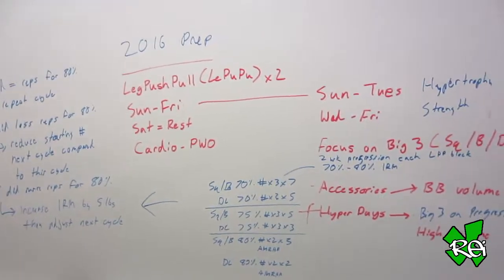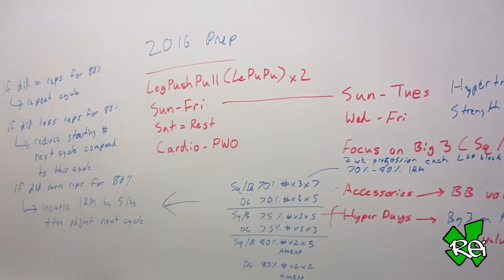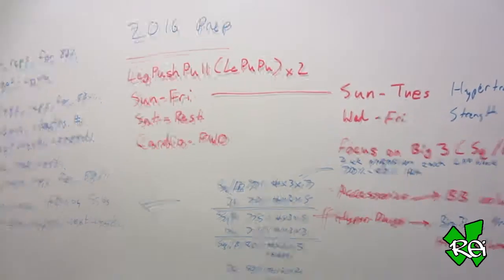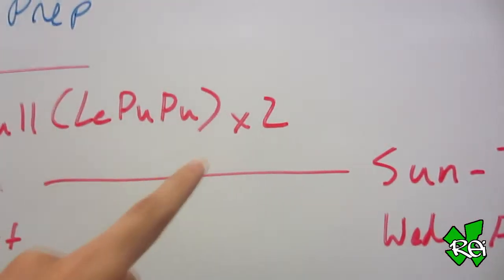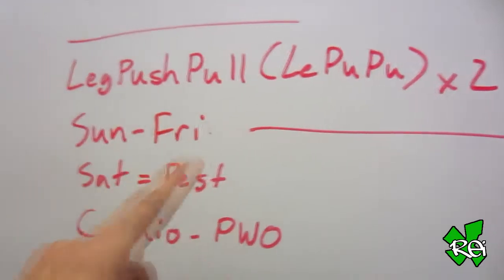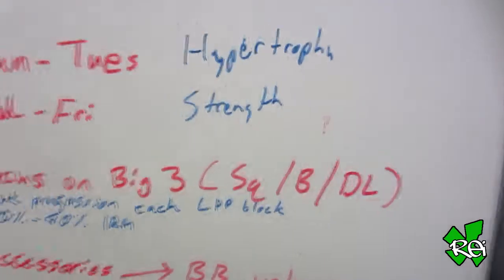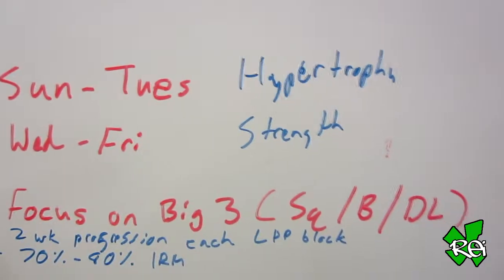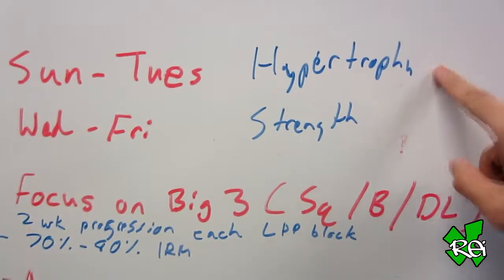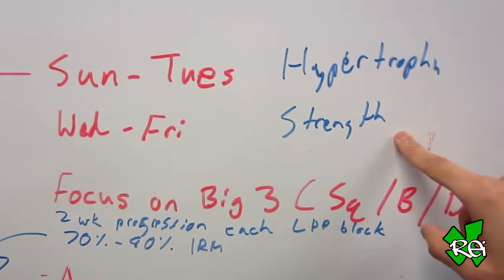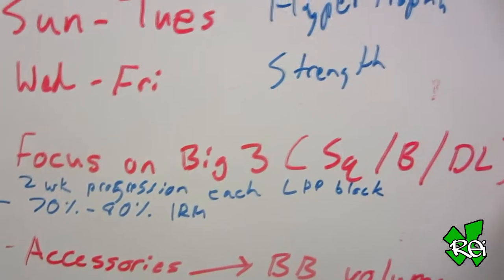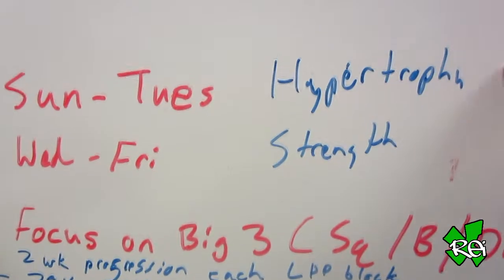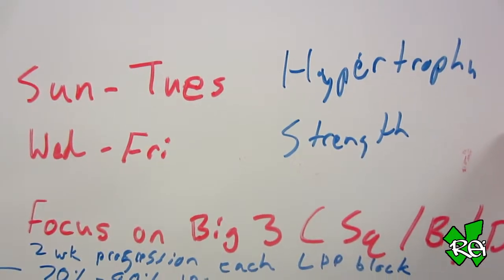Alright, so this is how the 2016 prep is going. Anything written in blue is pretty much the additions or the changes to my current prep. Still doing the same thing: leg, push, pull times two, Sunday to Friday, rest Saturday, cardio is always done post-workout. The only real difference here is that at the beginning half of the week, the first leg, push, pull, I'm doing hypertrophy focused stuff. And then the second half will be strength stuff. Still focusing on the big three, but I'm going to be focusing on the big three for both blocks of the week.